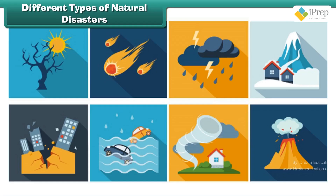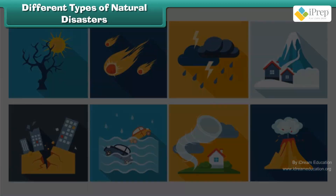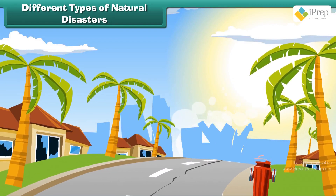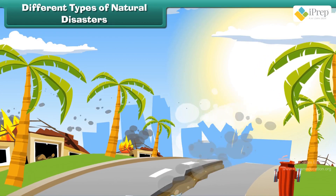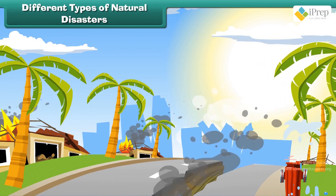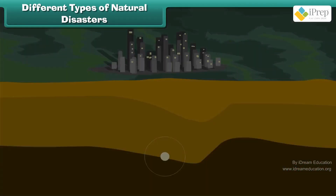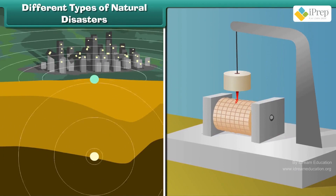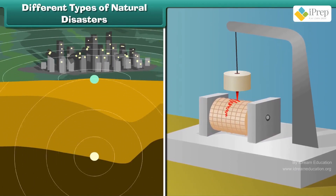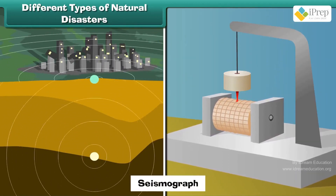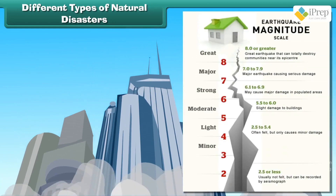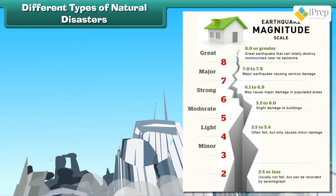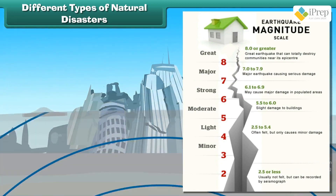An earthquake is a sudden violent shaking of the ground because of the movements within the earth's crust. The magnitude of an earthquake is measured by an instrument known as the seismograph. Richter designed a scale to measure the strength or intensity of the shock waves produced by an earthquake.